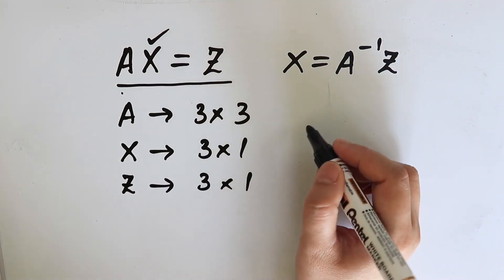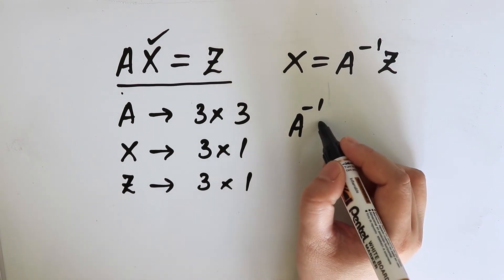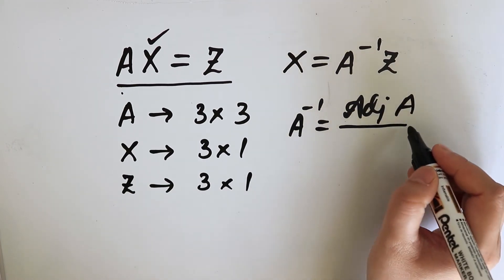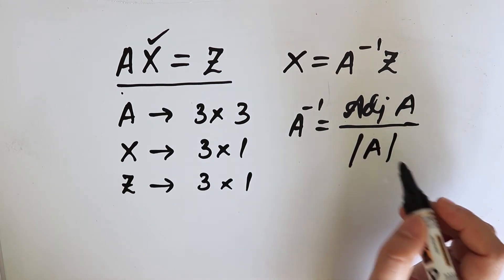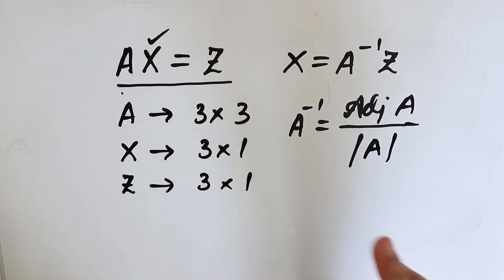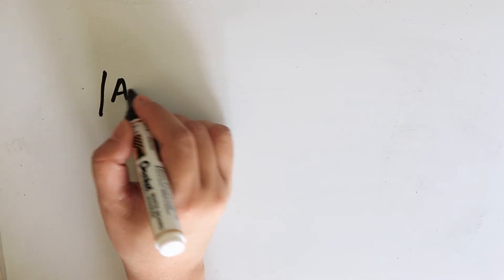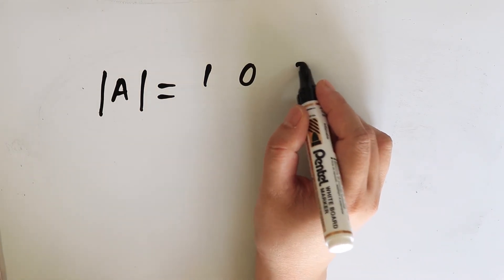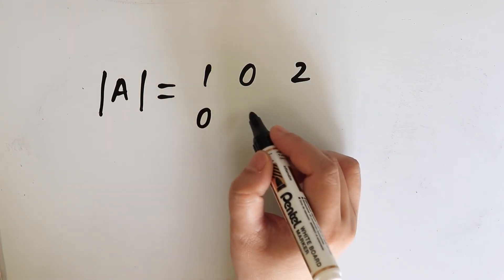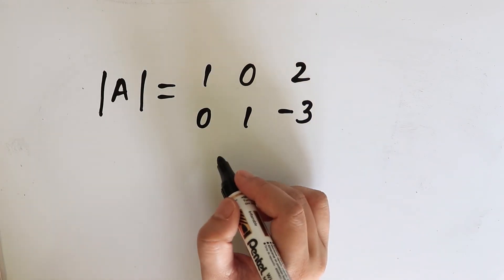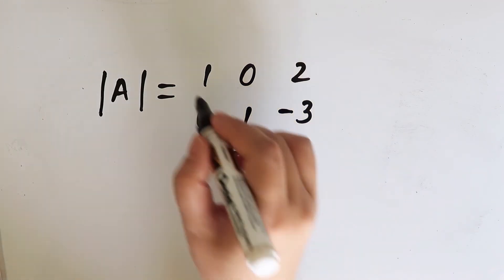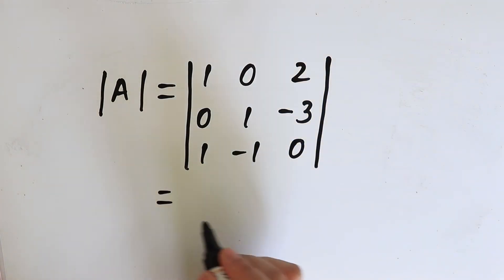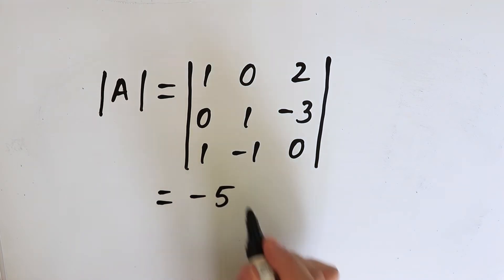By formula, we know that A inverse is equal to the adjoint of A divided by the determinant of A. This is how we find the inverse of a matrix. In our example, the determinant of A will be equal to the determinant of the coefficient matrix, and after calculation you can see that it is equal to minus 5.